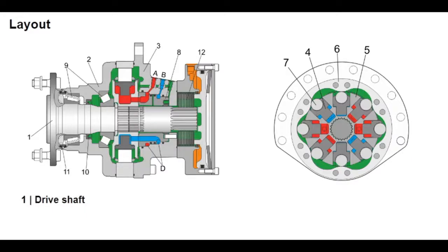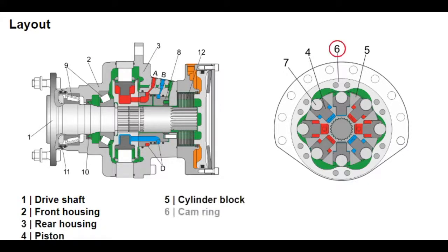The radial piston motor consists of a front and rear housing, as well as a rotary group with pistons, cylinder block, cam ring (also called a cam disc), roller, and distributor.